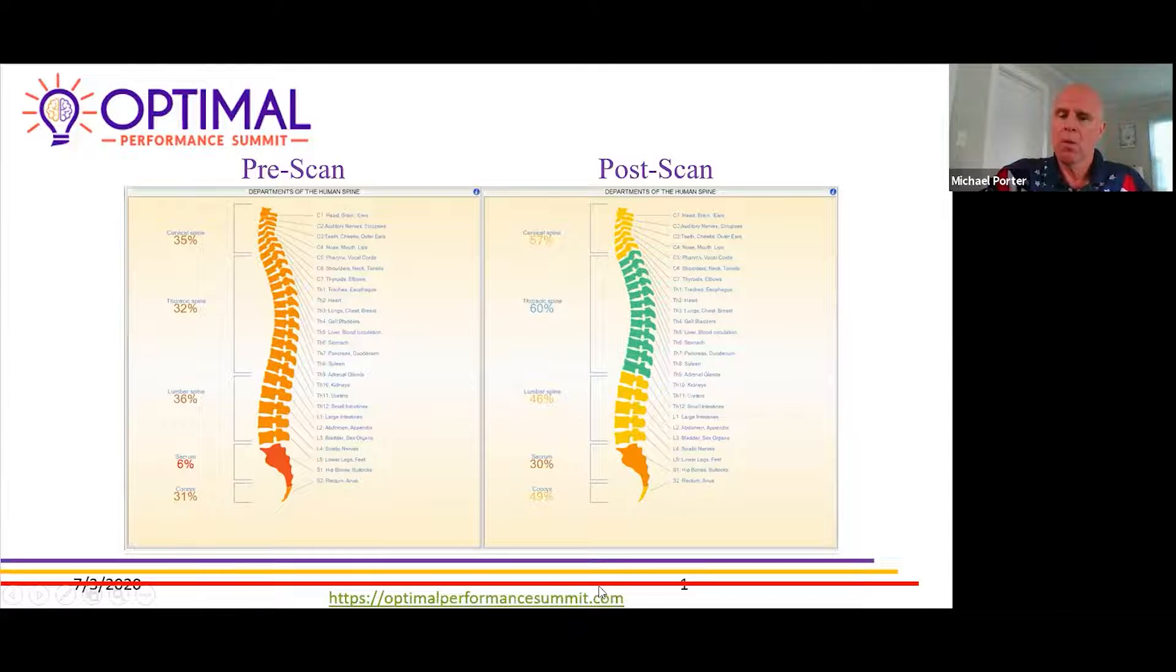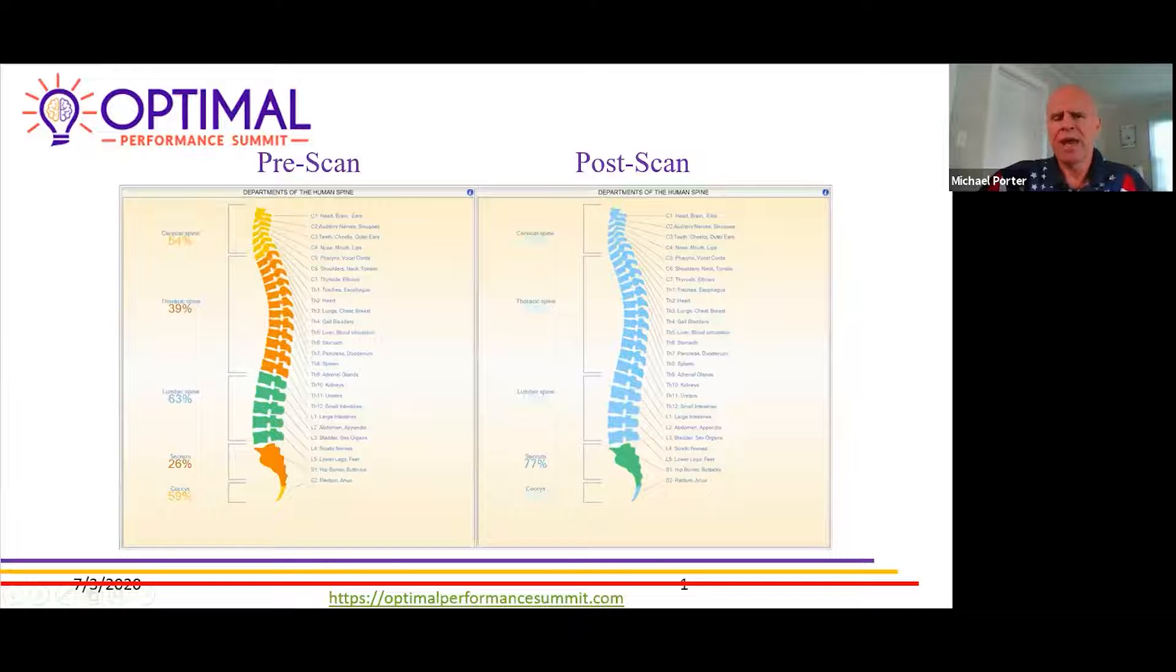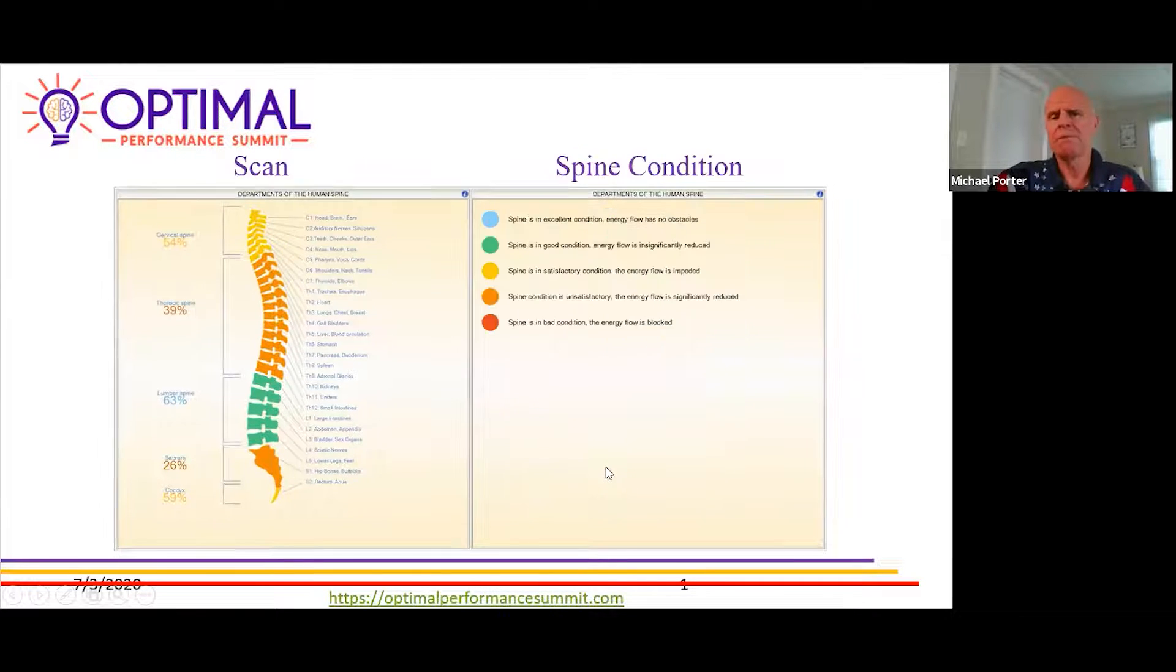With another session we had 50, 39, 63. We moved all these up here in the 90s, close to 100. What these colors represent: this is a person where energy flow is blocked, this is where it's significantly reduced, this would be someone where the energy flow is kind of in a balanced range, this would be good, this would be excellent.